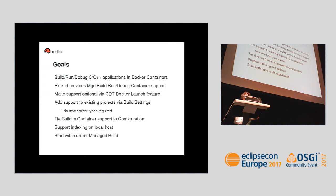Some of you might be familiar with the PTP project where they support remote build and other things. They support indexing on the remote host or remote platform. I didn't want to do that — I just want to support indexing on the local host, and that will define why I did what I did. I also have fewer problems than PTP because with a remote host you really don't know any information about it, whereas when you're dealing with a Docker image, you know everything there is to know.